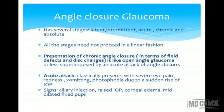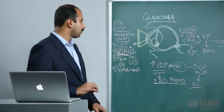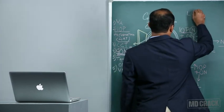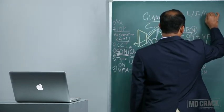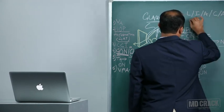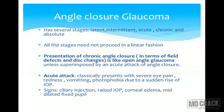Angle closure glaucoma merits special mention. It consists of five stages: latent, intermittent, acute, chronic, and absolute. These stages may be independent of each other, need not always be sequential, and can jump. Chronic angle closure may mimic open angle glaucoma on visual field testing due to gradual pressure rise, unless superimposed by acute attacks. An acute attack of angle closure classically presents with acute onset pain, redness, vomiting, sudden rise of intraocular pressure, and photophobia. Signs include ciliary injection, corneal edema from limbus to limbus, raised intraocular pressure, and a dilated fixed mid-dilated pupil.